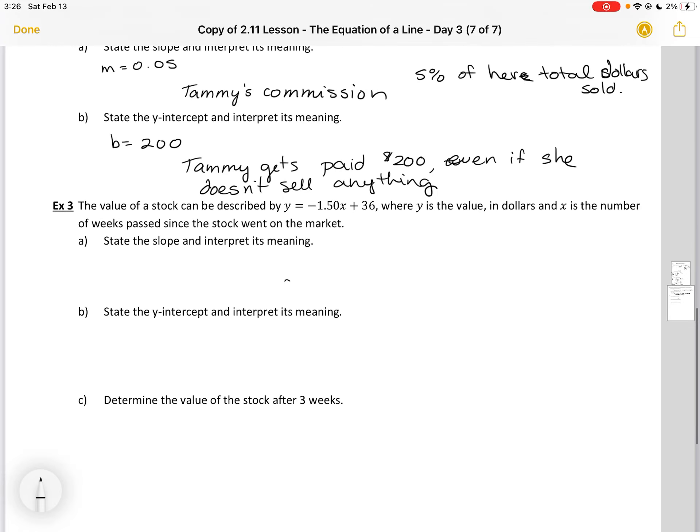Let's look at one more word problem. The value of a stock could be described by y equals negative 1.5x plus 36, where y is the value in dollars and x is the number of weeks past since the stock went on the market.